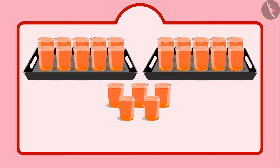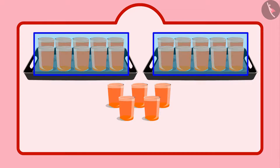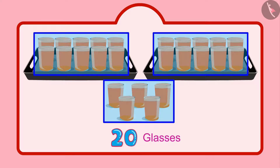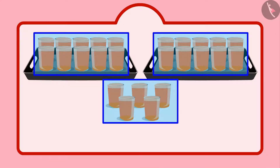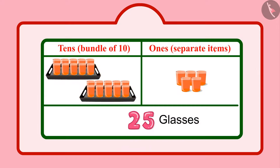Okay, children, can you tell me how many glasses of sherbet were distributed by Chotu and Aarti together? Let's see. First of all, Chotu distributed two groups of ten glasses, that is 20 glasses of sherbet, and then five more glasses — that makes it 21, 22, 23, 24, 25. Chotu distributed 25 glasses of sherbet.